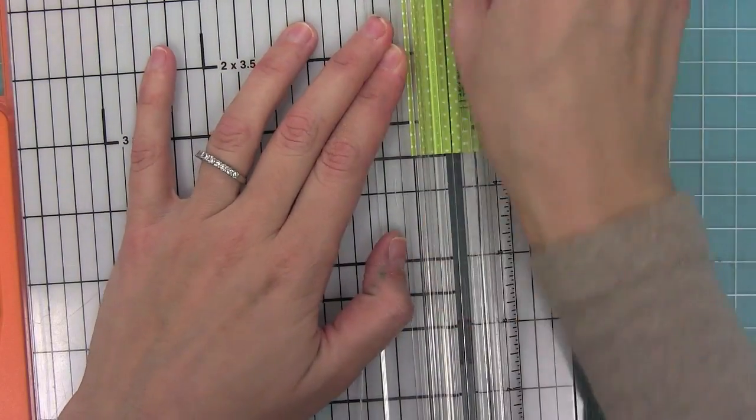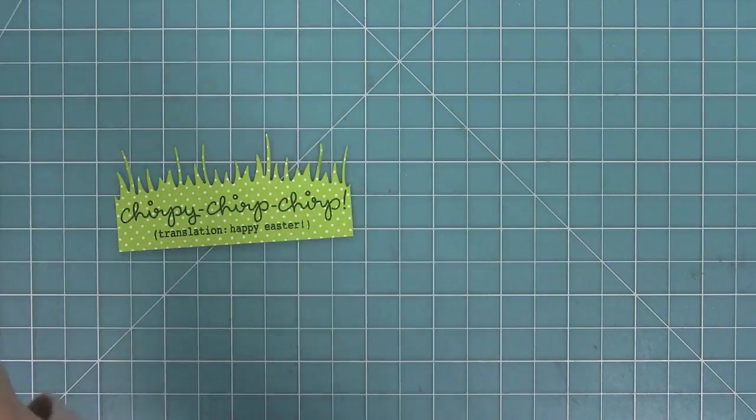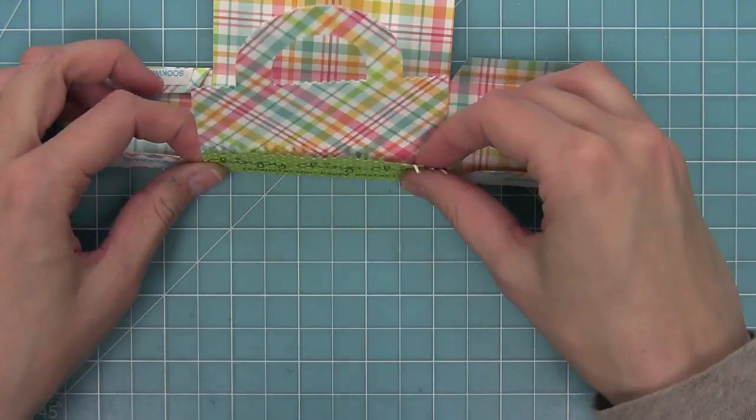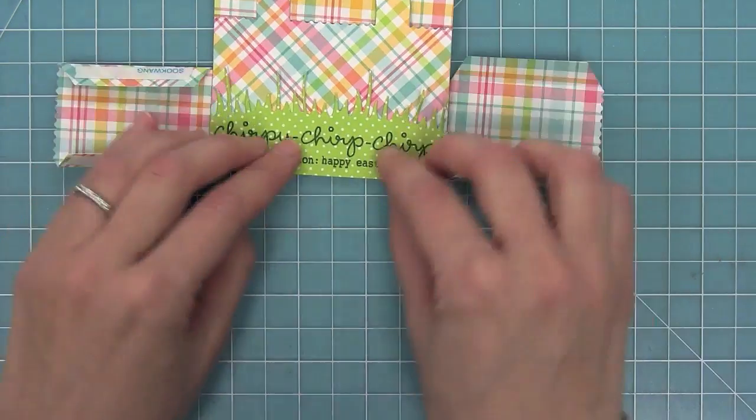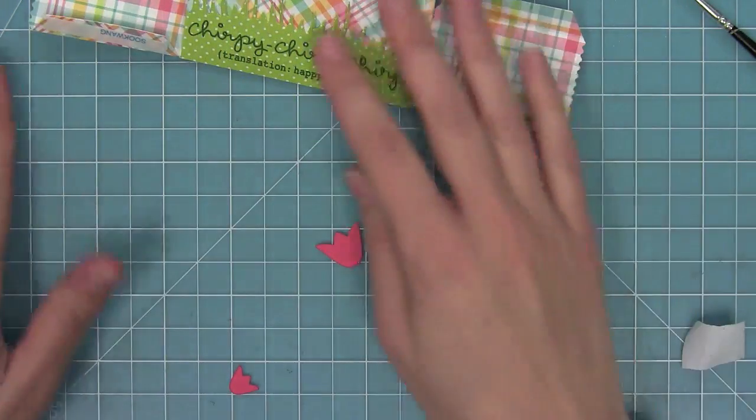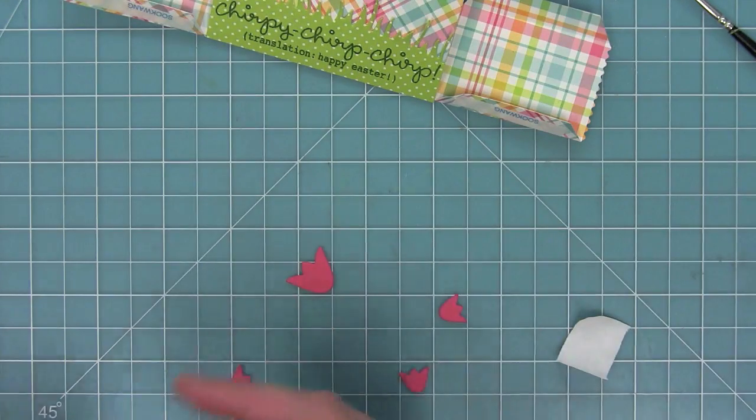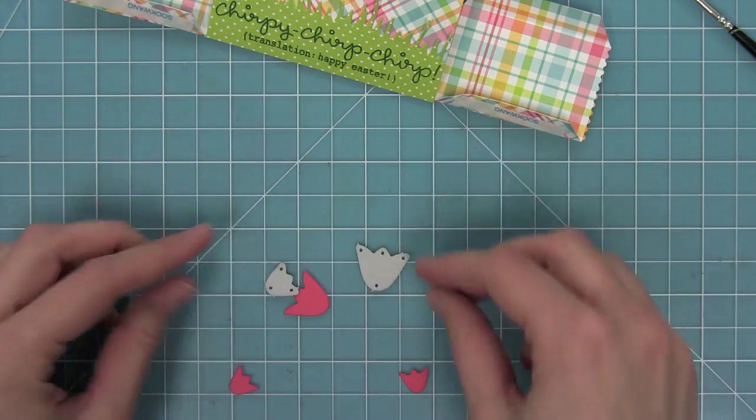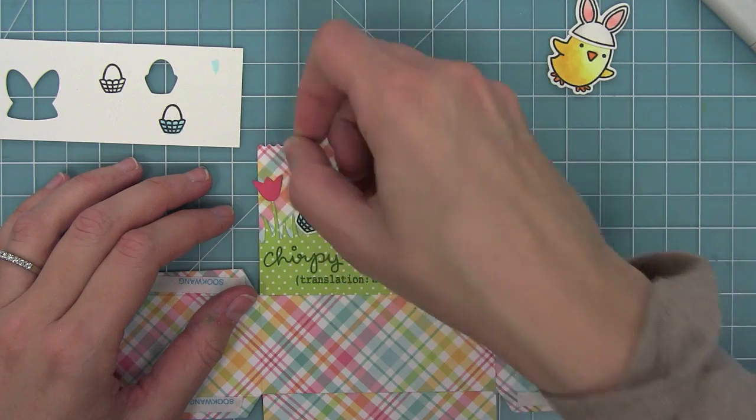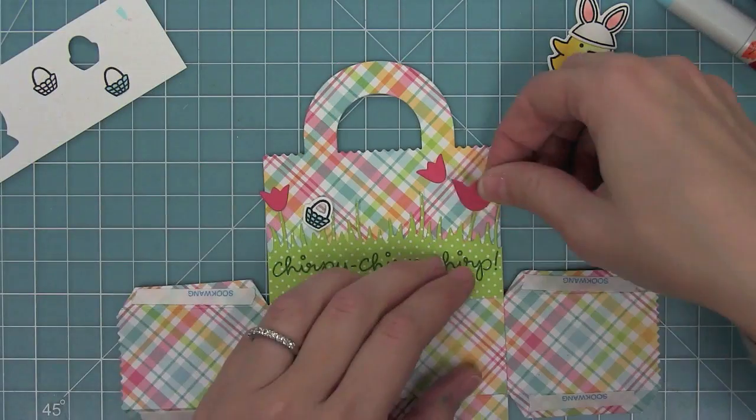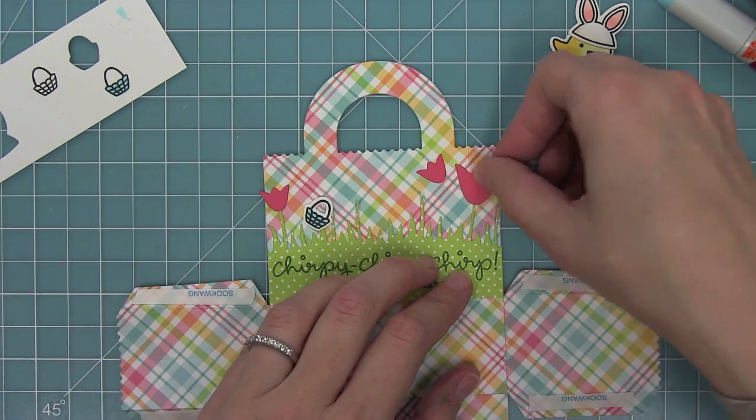Now that I've stamped it, I can trim this piece down right to the bottom of where the Happy Easter sentiment is. Then I'm going to adhere that right along the bottom part of the bag. Now I'm going to cut some tulips out of some guava cardstock using the tulip die that's included with the Meadow borders, and I can start to adhere those on top of the grass pieces to make it look like a cute little flower meadow gorgeous little area.